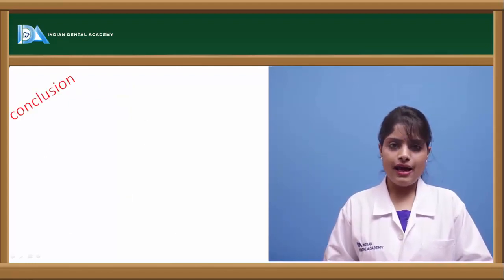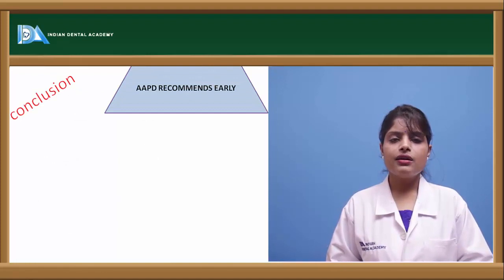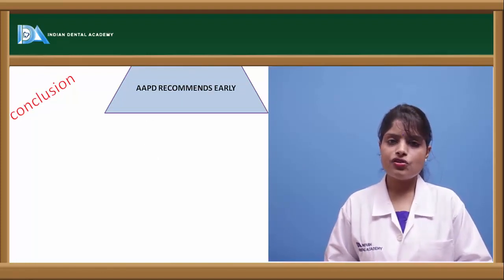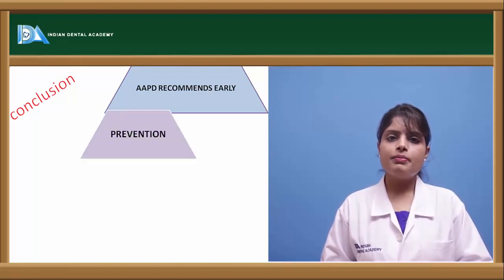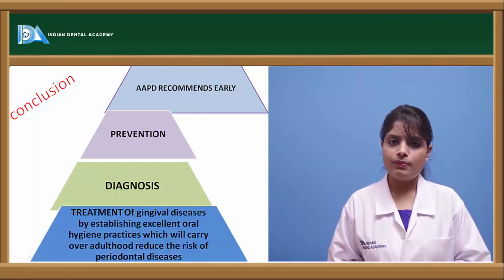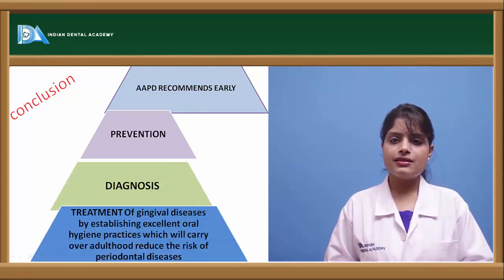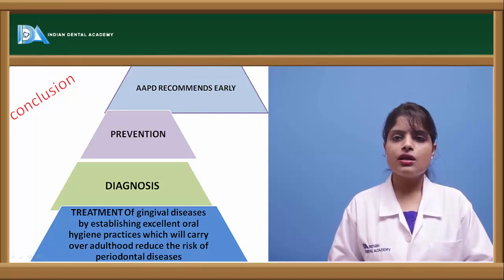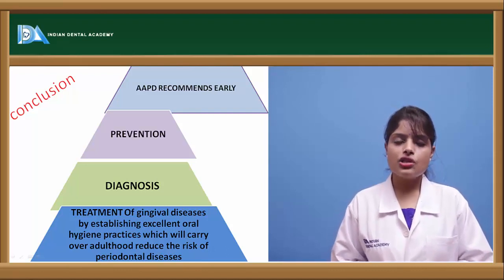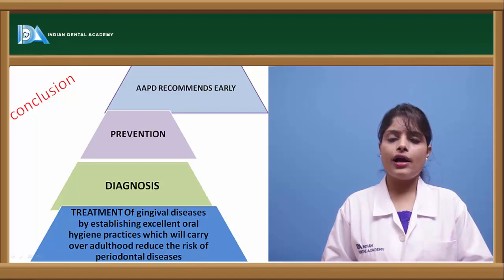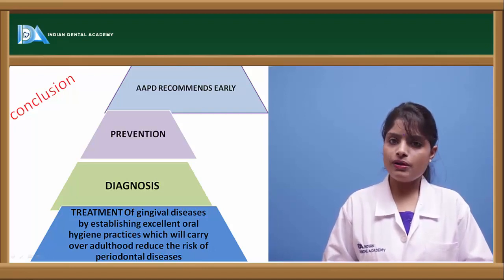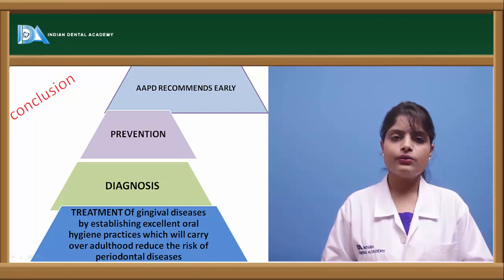In conclusion, the American Academy of Pediatric Dentistry recommends early prevention, diagnosis, and treatment of periodontal diseases, and establishing excellent oral hygiene measures in children — which will carry over to adulthood — for decreasing the risk of periodontal diseases.